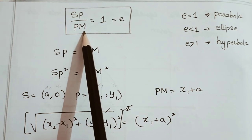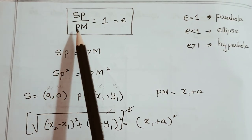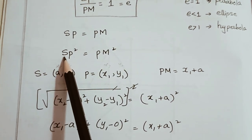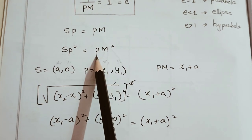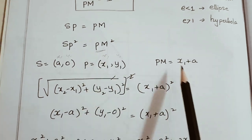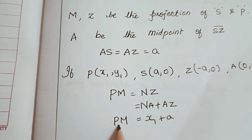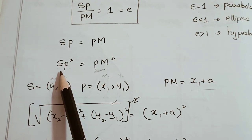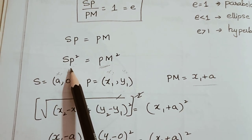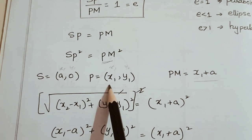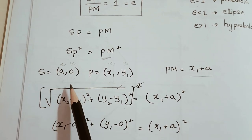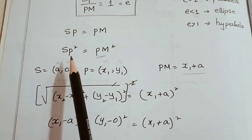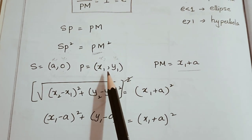Since SP = PM, we now find SP using the distance formula. S is (a, 0) and P is (x1, y1). The distance formula gives SP = √[(x1 - a)² + (y1 - 0)²]. We already know PM = x1 + a. Squaring both sides: SP² = PM², so (x1 - a)² + y1² = (x1 + a)².